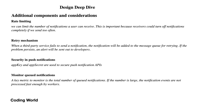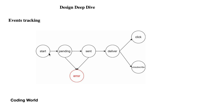Rate limiting is important — we can limit the number of notifications a user can receive because a receiver could turn off notifications completely if we send too often. There should also be a retry mechanism as discussed. For security in push notification, an app key and app secret are used to secure push notification APIs, since the REST API should not be open to everyone — use HTTPS with app key and secret.